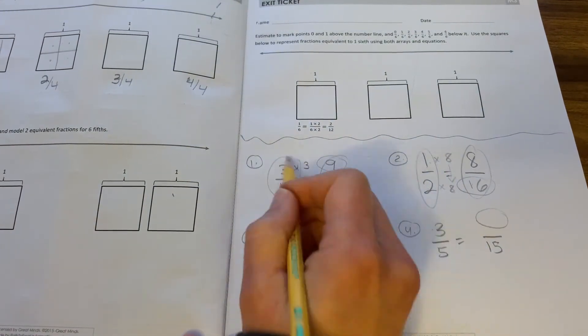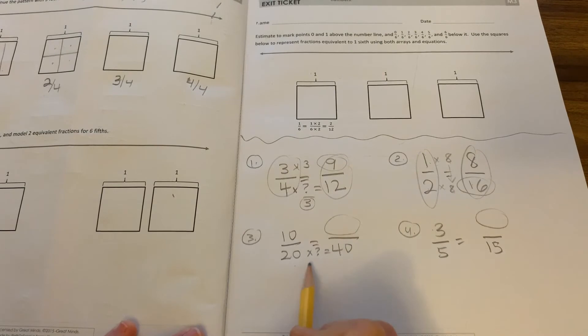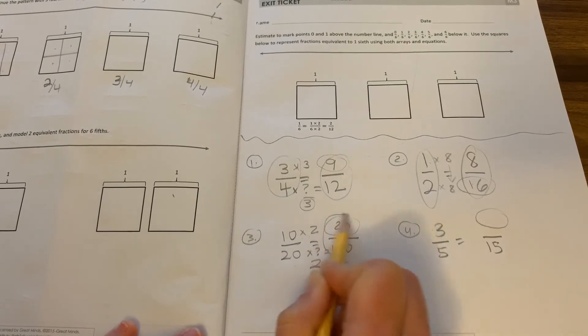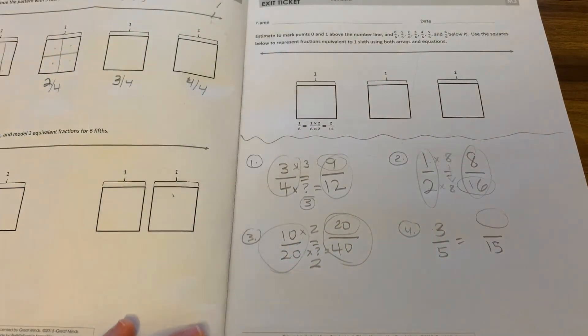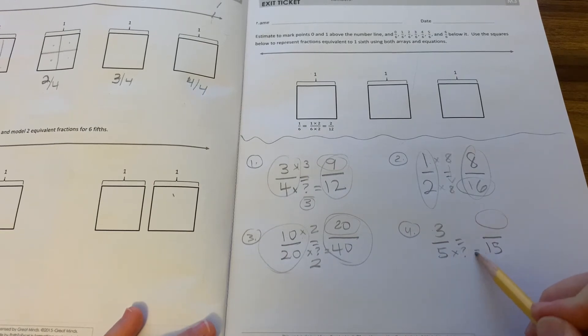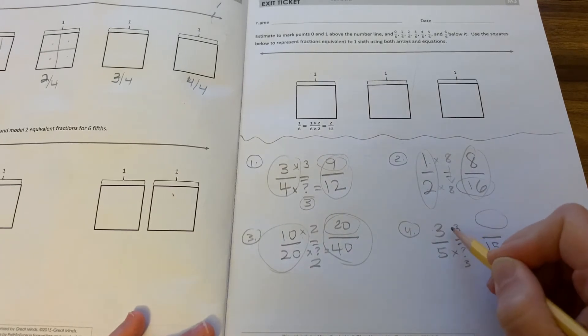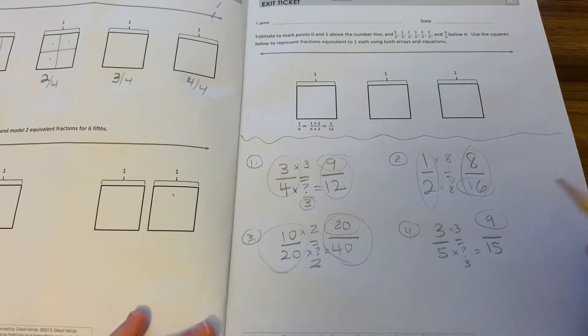These are equivalent fractions. Next one. Twenty times what is 40? The answer is two. Multiply the numerator. Ten times two. So, the missing number is 20. These are equivalent fractions. And our final one. Five times what is 15? The answer is three. Whatever I do to the denominator, I do to the numerator. Three times three is nine. Good.